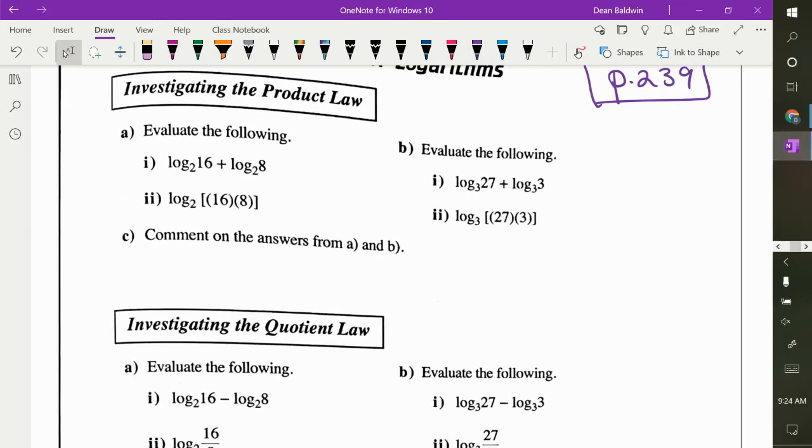Okay, so if I asked you to evaluate this expression here, log base 2 of 16 plus log base 2 of 8, without a calculator, what would you do? I would try to get the arguments to the same base. So 2 to what power is 16? Four. And 2 to what power is 8? 3. So I can rewrite it like that. So what is log base 2 of 2 to the 4 equal? 4, because the base is matched. Plus the second one is 3, which is 7.